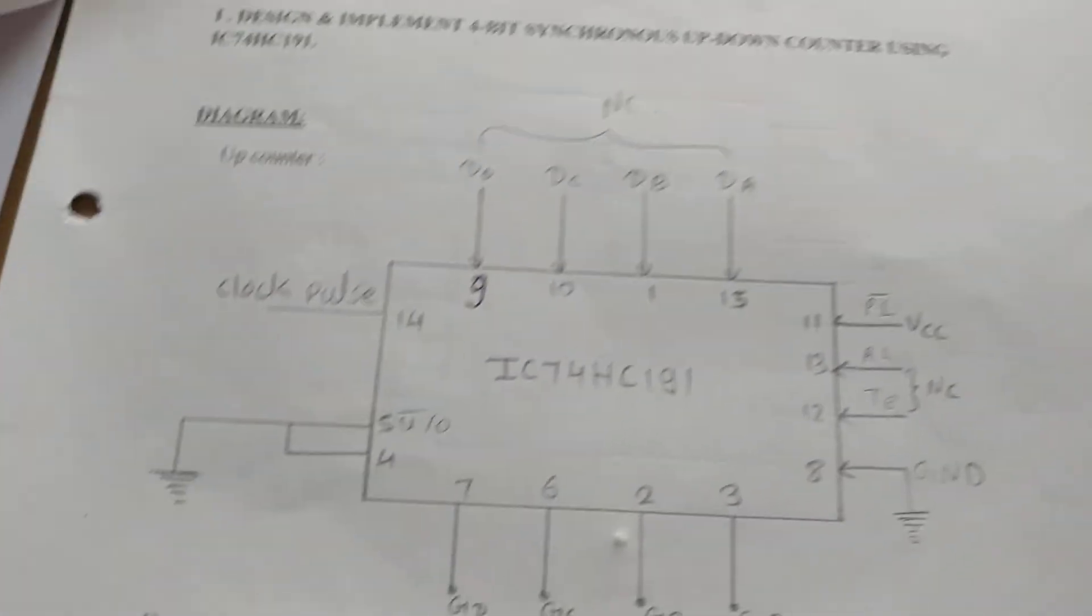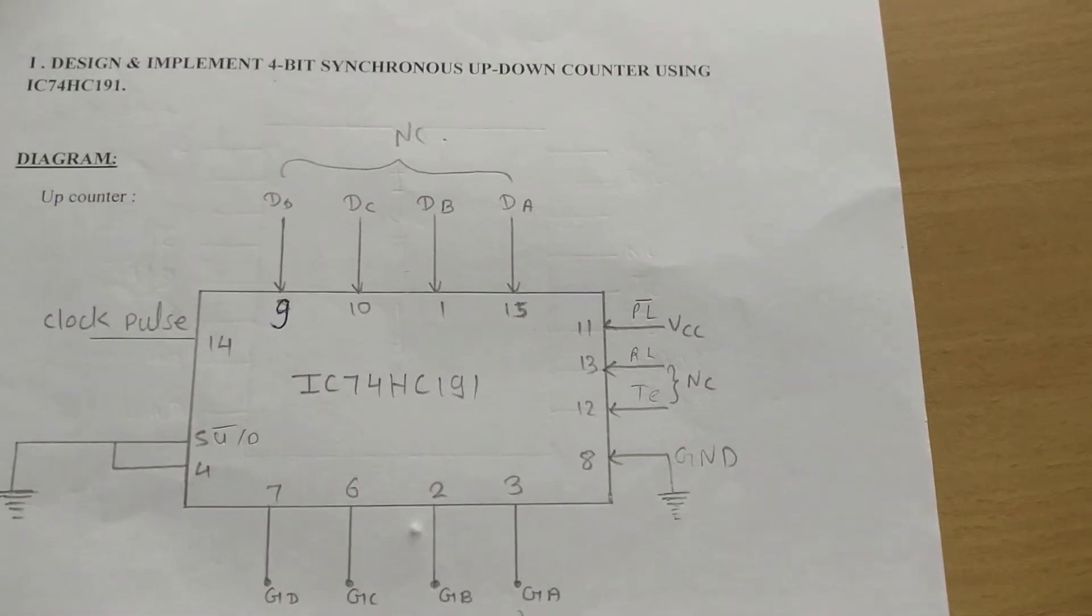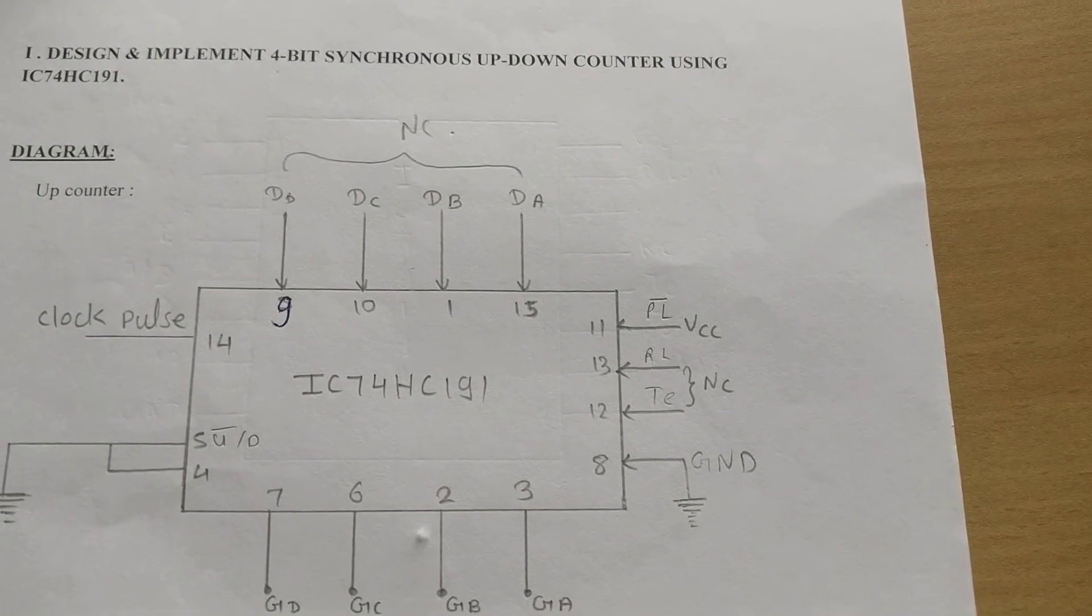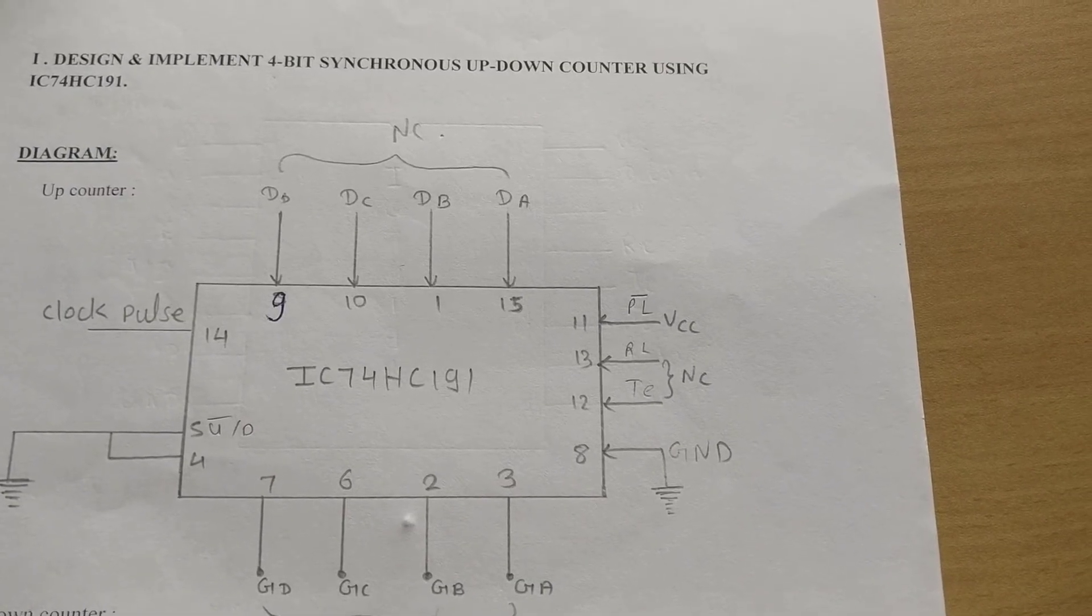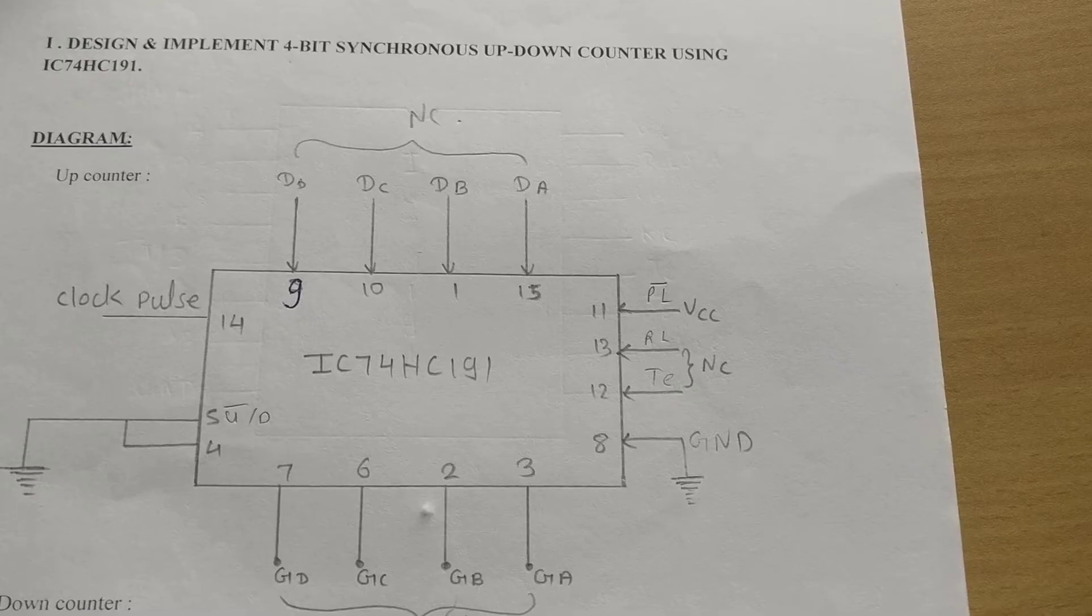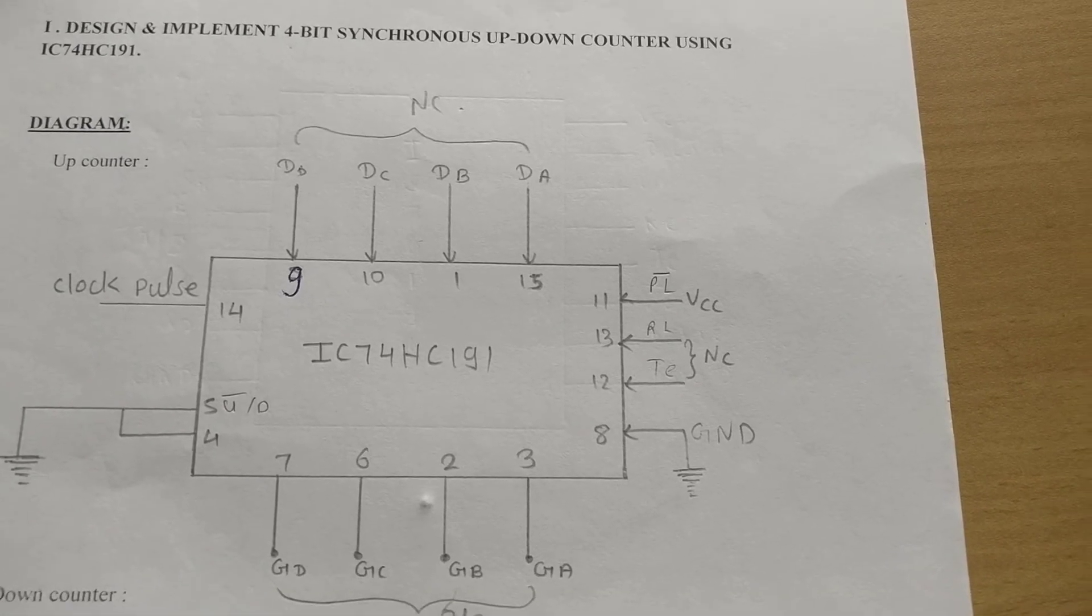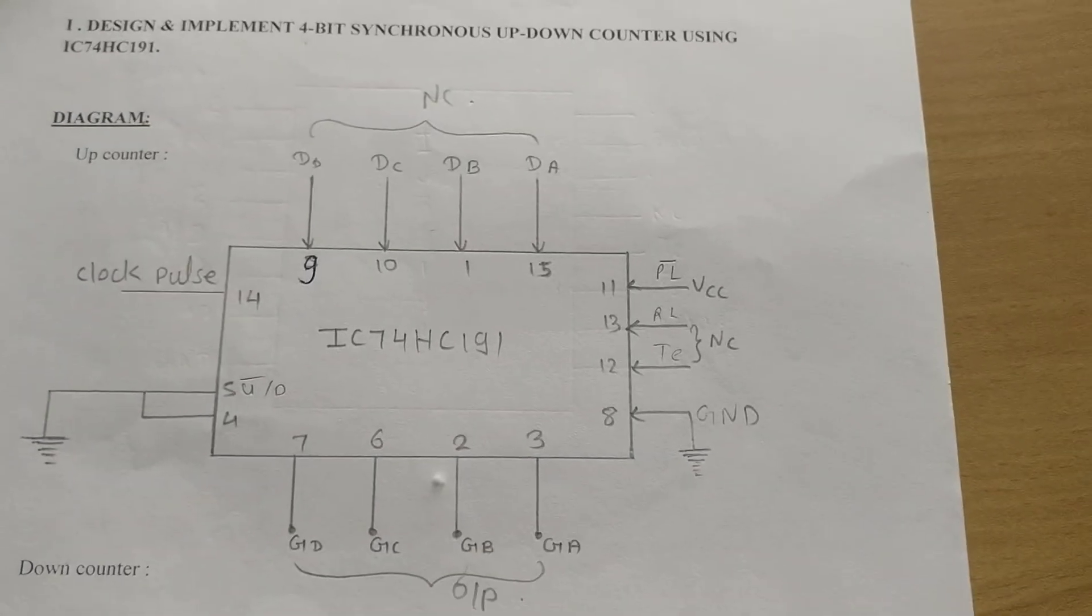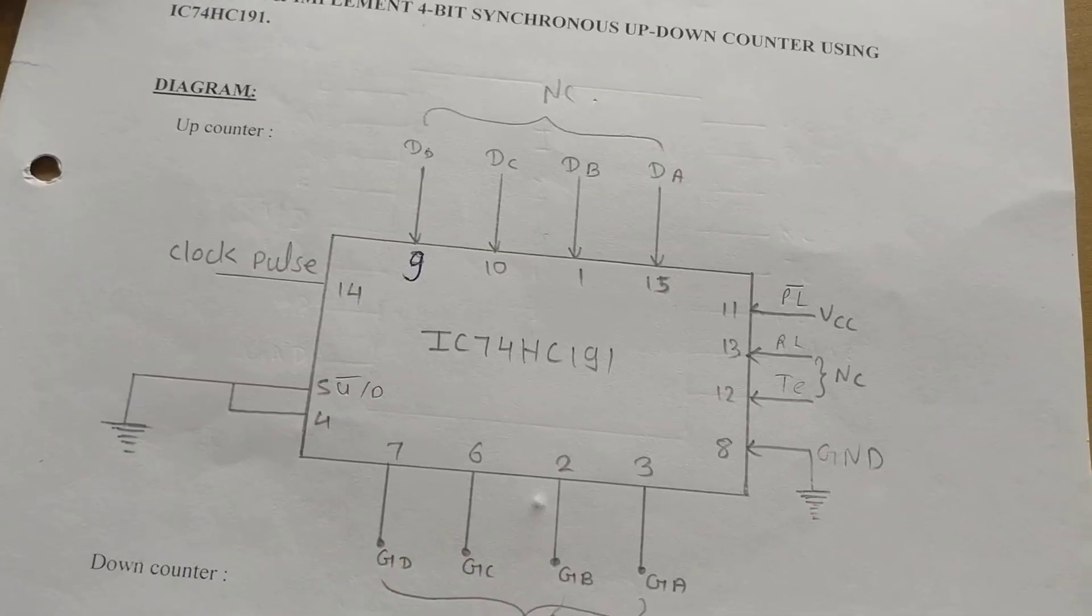This is the diagram of an up-counter. The aim of this part is to design and implement a 4-bit synchronous up-down counter. This is a synchronous counter IC. In the last experiment, 7490/7493 was an asynchronous counter IC. In this, QA, QB, QC, QD—all the flip-flops are triggered using the same clock.